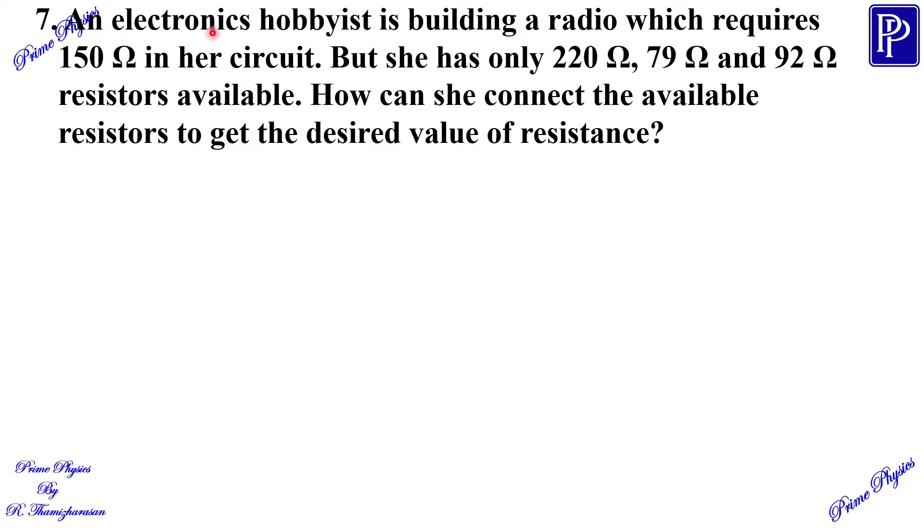An electronic hobbyist is building a radio which requires 150 ohm in her circuit. But she has only 220 ohm, 79 ohm and 92 ohm resistors available. How can she connect the available resistors to get the desired value of resistance?